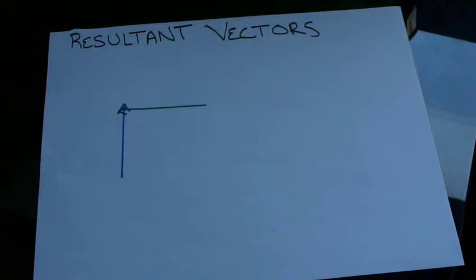What is a vector? A vector is defined as a quantity that has two components. The components are magnitude, some number value, and direction. It's important to understand where your vectors are pointing, and those are the two components that make up a vector. If it doesn't have those two components, it's not a vector.